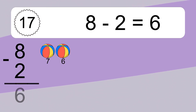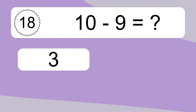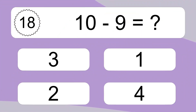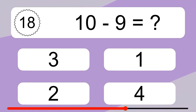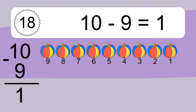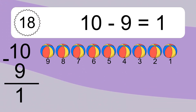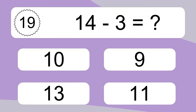8 minus 2 equals 6. Let's count it. 7, 6. 10 minus 9 equals what? 10 minus 9 equals 1. Let's count it. 9, 8, 7, 6, 5, 4, 3, 2, 1.